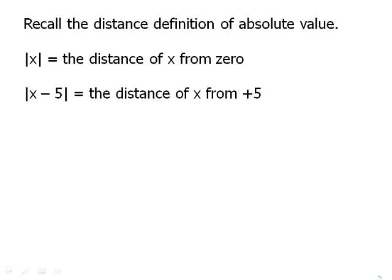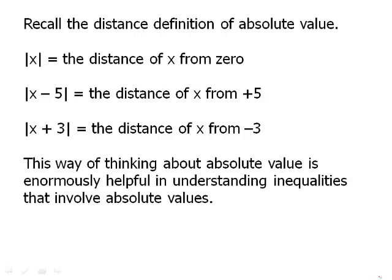The absolute value of x minus 5 is the distance of x from 5. Absolute value of x plus 3 is the distance of x from negative 3. This way of thinking about absolute value is enormously helpful in understanding inequalities that involve absolute values.